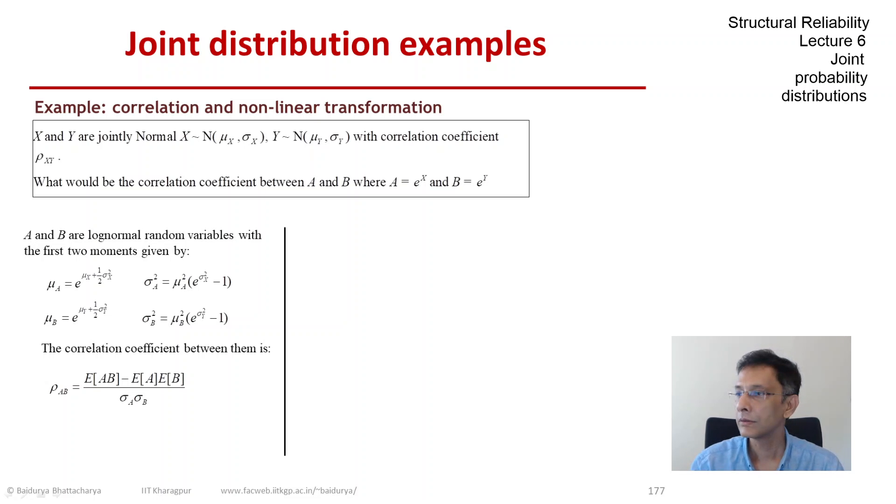In this expression we know the mean of a which is on the screen and the mean of b and the standard deviation of a and standard deviation of b. The only thing we do not know is the expectation of the product. E[ab] is not known. Let's see if we can find that.